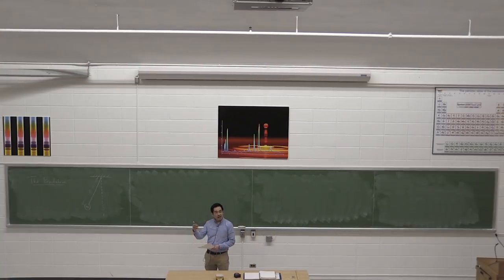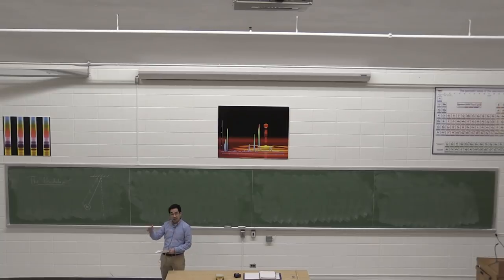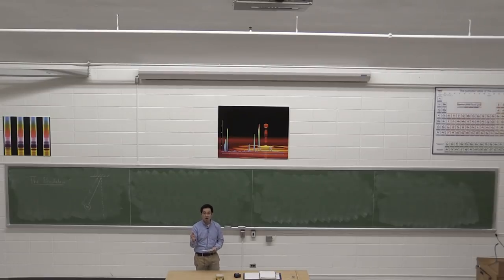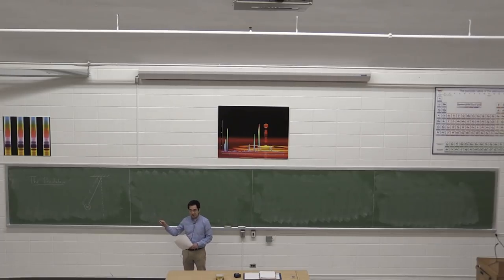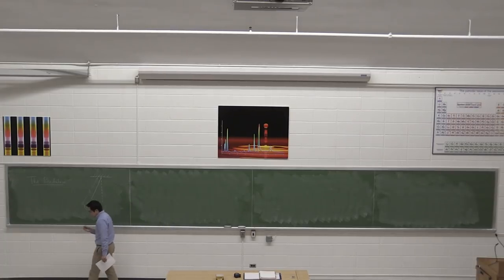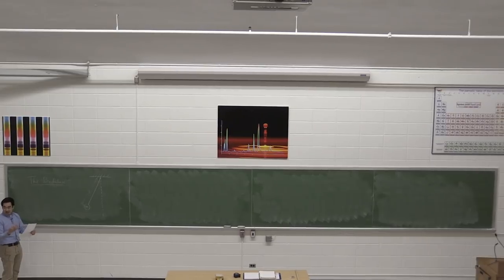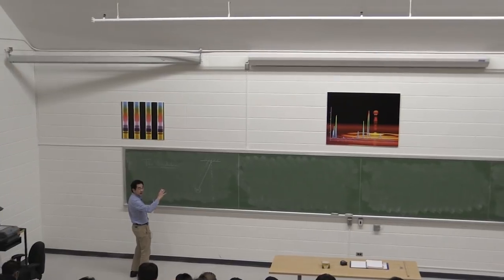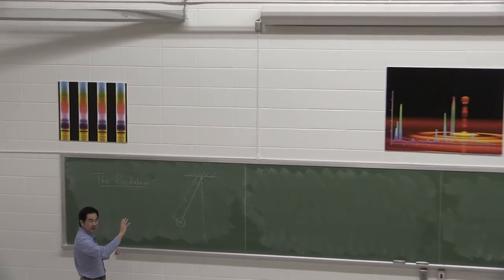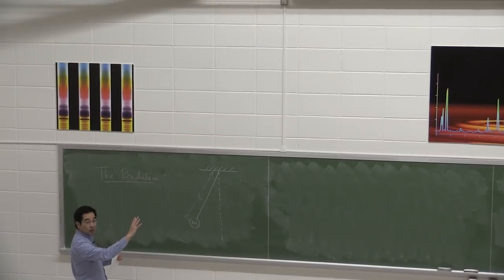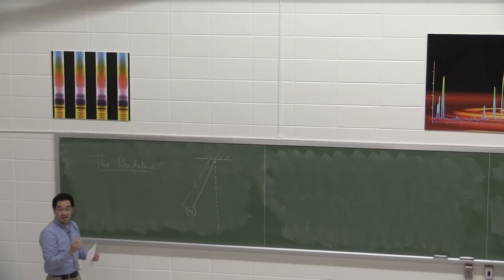We did this problem at the very end of the momentum section, where we had a rod swinging back and forth — it oscillated and gave us positive and negative answers, indicating oscillatory behavior. The question now is how do we use what we've developed for mass and spring and apply it to the oscillatory motion of a pendulum? We need to think carefully about the free body diagram and how we set up an equation of motion.